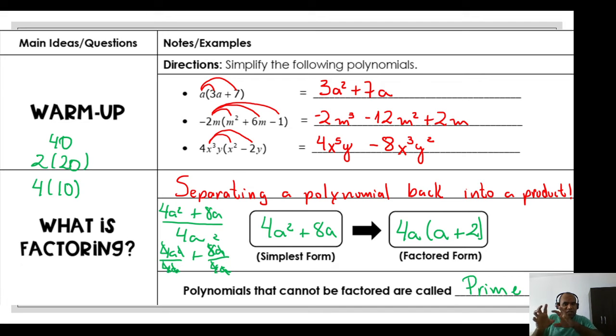When the polynomial cannot be factored, remember we call this prime, like a prime number. A prime number can be divided but just by itself and number one. It's the same thing here with polynomials. Let's go ahead to the next slide.